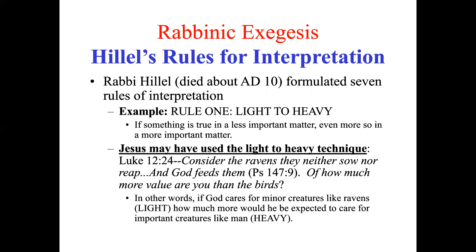At least one of Hillel's rules seems to have some evidence of being used in the New Testament: the rule of light to heavy. If something is true in a less important matter, it's even more likely to be true in a more important matter. This is kind of the way Jesus argued in Luke 12:24 — if God cares for minor creatures like ravens (a light matter), how much more would he be expected to care for important creatures like human beings made in the image of God (a heavy matter). Jesus is arguing in a way which rabbinic listeners would have understood and appreciated.